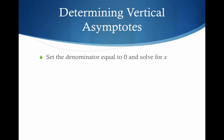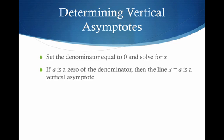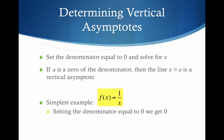So how do we find vertical asymptotes? They're really easy to solve for. We're going to set the denominator equal to zero and solve for x. If a is a zero of the denominator — meaning when we solve for x we get some number a — then the line x equals a is a vertical asymptote. The simplest example: take the basic reciprocal function, one over x. Take the denominator x, set it equal to zero, x equals zero. So x equals zero is the vertical asymptote, and we saw in the graph that the function could not touch the y-axis.